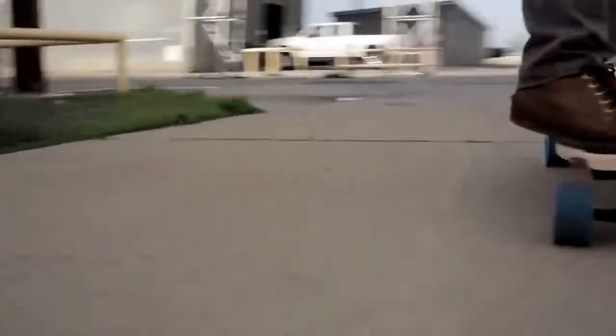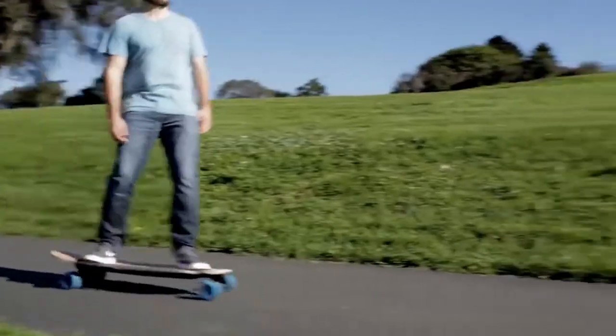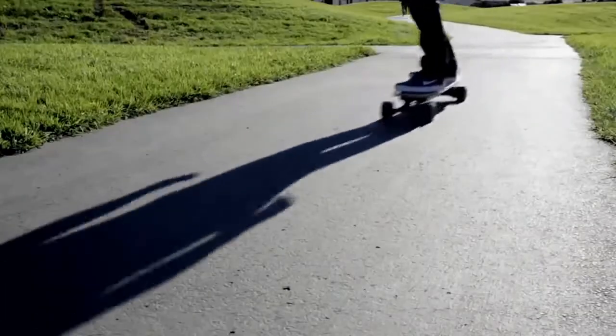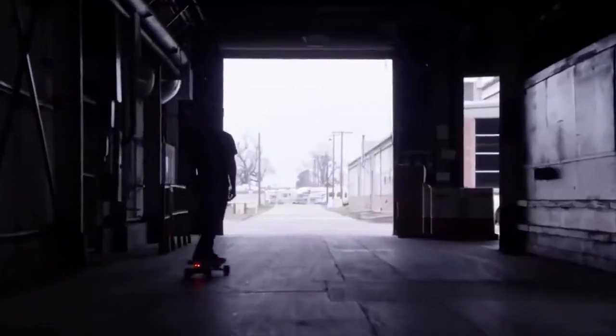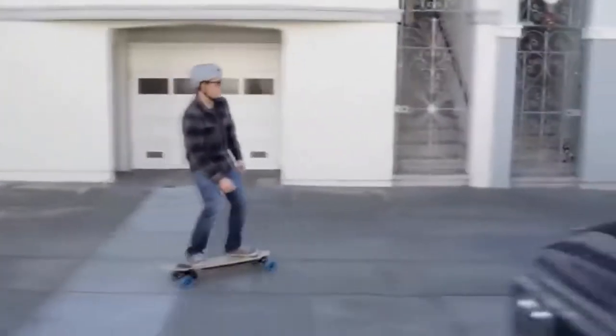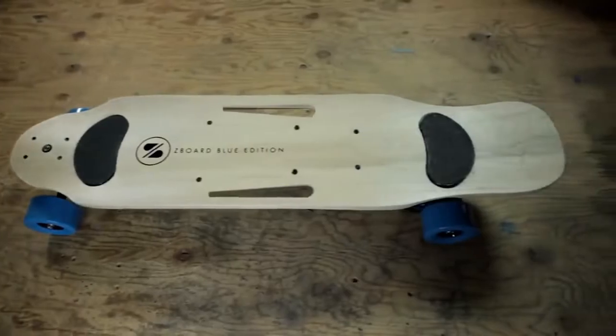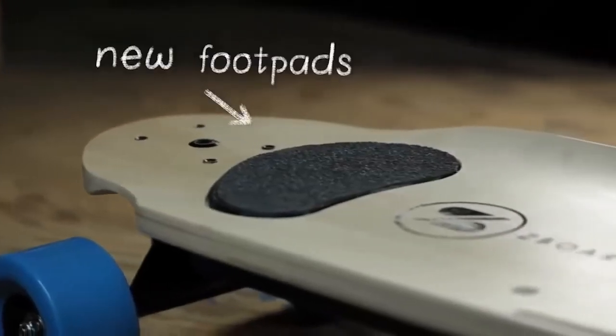This vehicle can speed up to 20 miles per hour and comes in two versions with a weight of 16 and 18 pounds, which can ride 16 and 24 miles respectively. The skateboard gets fully loaded in 90 minutes. You can buy it for $1,300 or $1,500 depending on the model you choose.